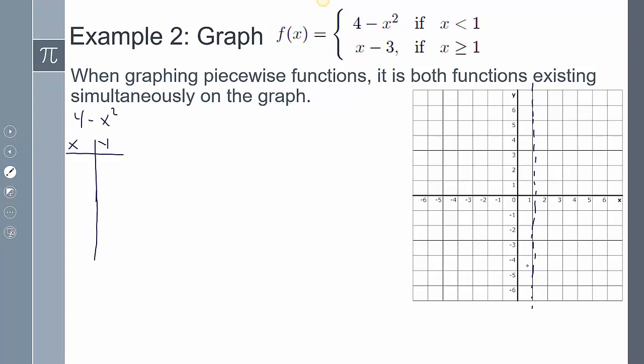Let's look at this first function here, 4 minus x squared. We're just going to create an xy chart. Our domain is x is going to be less than 1, so I want to be strategic and pick values in which x is less than 1.